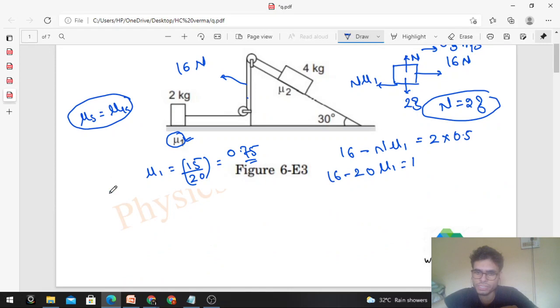Similarly we can find μ2 very easily for the second body which is 4 kg. The free body diagram shows it will have 16 Newton tension and friction force, because this block will accelerate forward with acceleration of 0.5 meter per second squared.